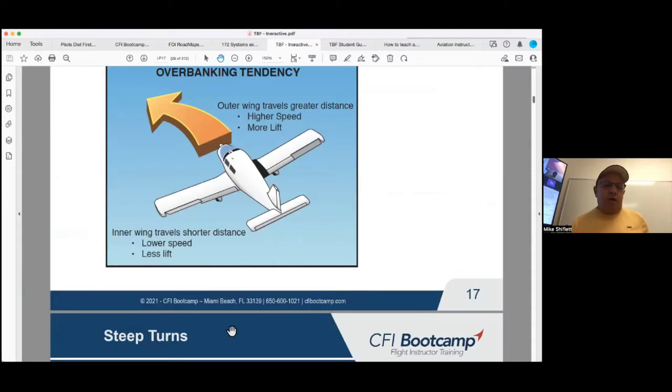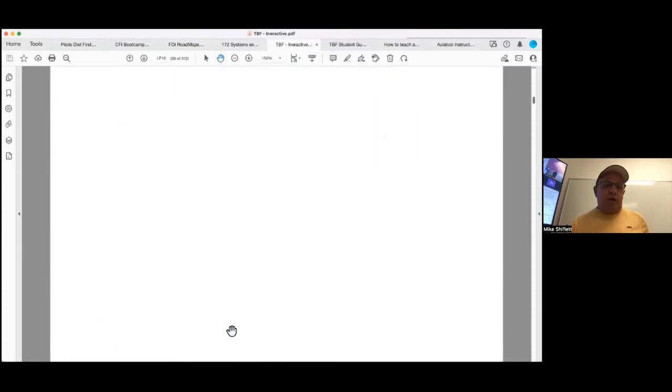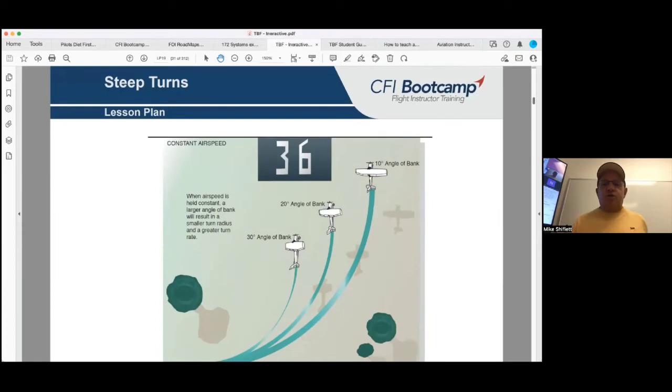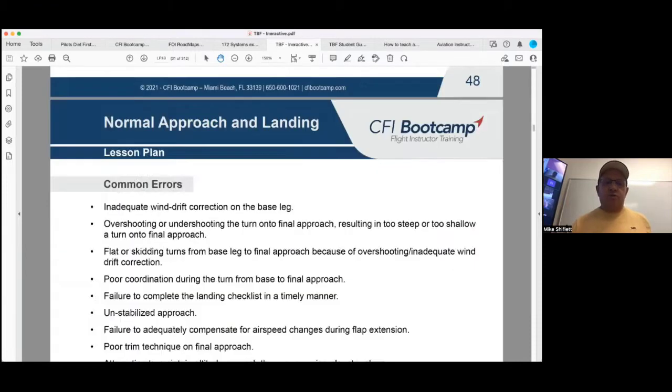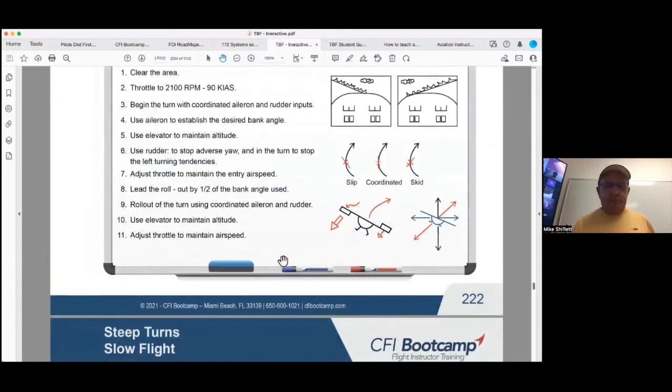And we don't provide the answers - we figure you should probably know that. Then common errors, and finally the completion standards and some extra artwork if it needs to be in it. So that's what's in there. That's what you give if they've had no ground. But if they've had ground school or if they've done an online course like Sporty's, which has a pretty good section on flight maneuvers, then you don't have to give the whole thing. You would just give the pre-flight briefing.